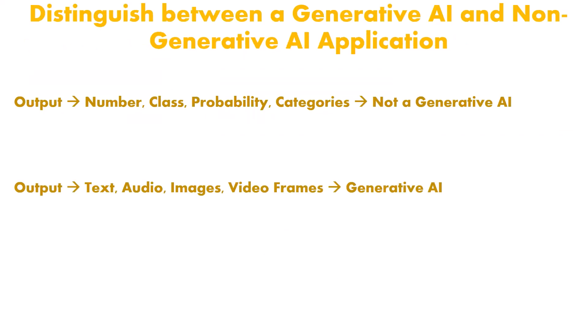Let's distinguish between generative and non-generative AI applications. In non-generative AI applications, the output is a number like 0 or 1, a probability, or a category — this corresponds to classification. In generative AI applications, we generate new data in the form of text, audio, image, or video frames. That's all for this video tutorial. I hope you learned something. See you in the next video — bye-bye.